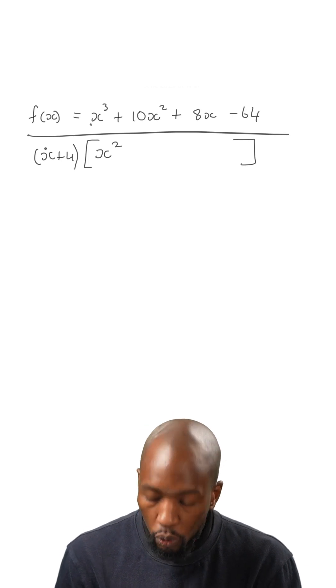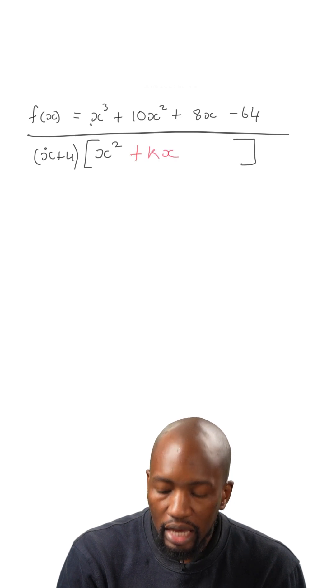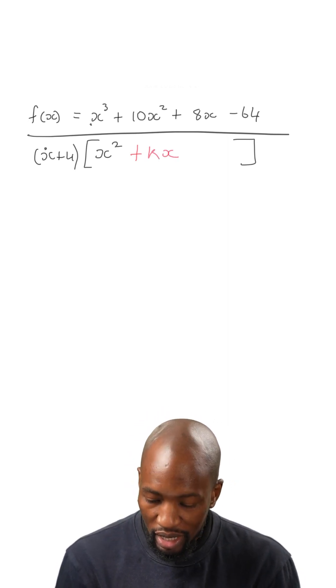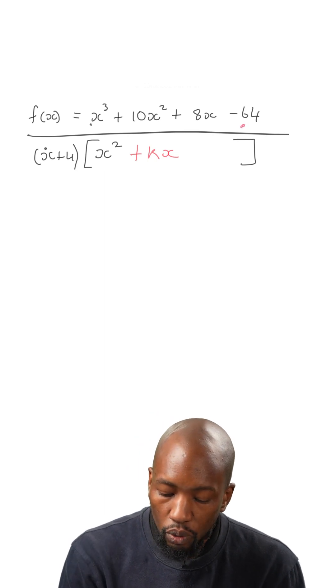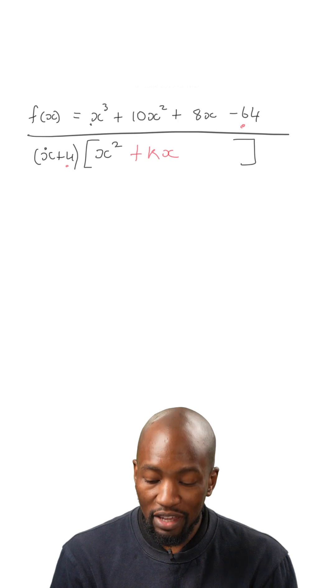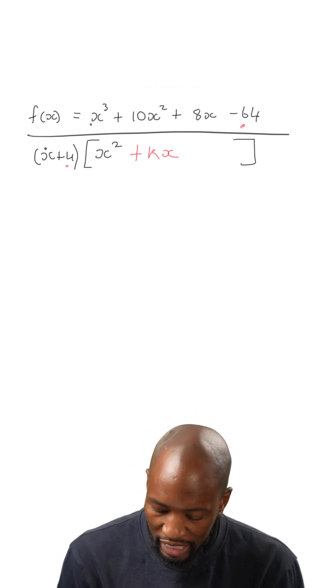Now in the middle, we need to add something special, which is plus kx. Now at the end, what we're going to do is, we're going to say negative 64 divided by 4. And what does that give you? That gives you 16, but it gives you negative 16.